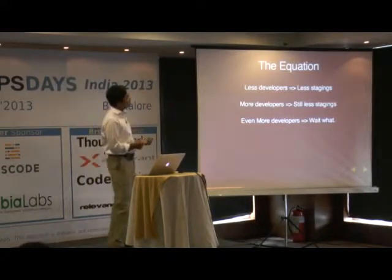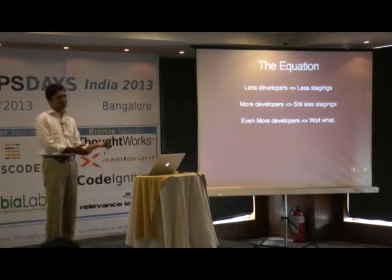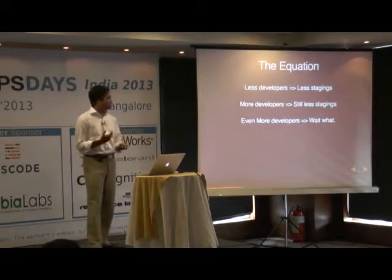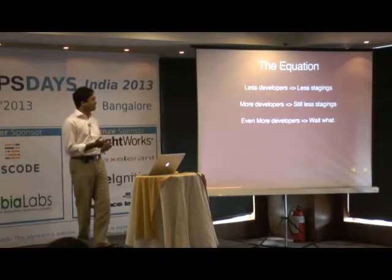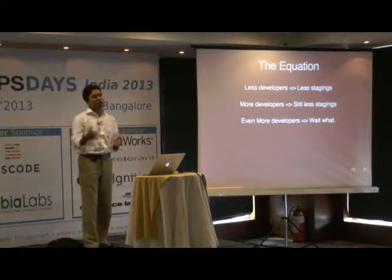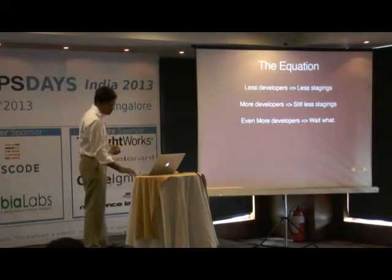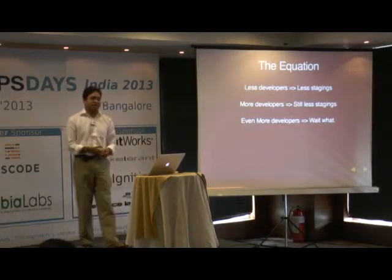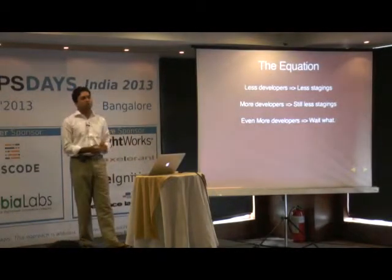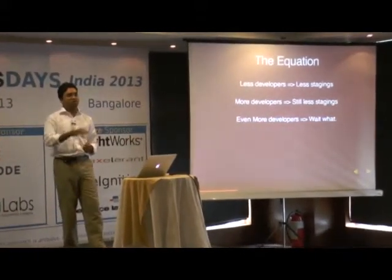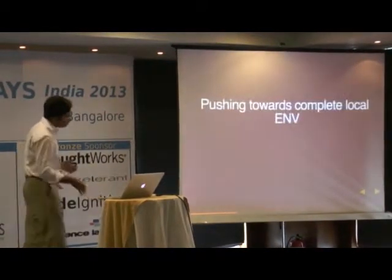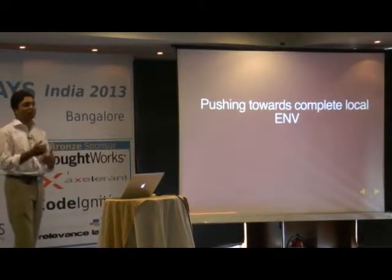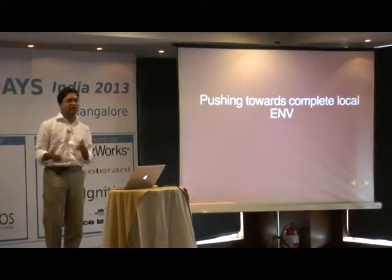Around two years ago there were around 30 to 40 developers and a limited number of staging environments, and all developers were continuously dependent on staging. Even a single feature or a single line of code needed to be deployed to staging to be checked — to confirm it worked in sync with the whole architecture. More developers started joining, but stagings could not scale at that pace. Even still it's growing, and the rate at which staging and the whole QA process could be done was not particularly scalable.